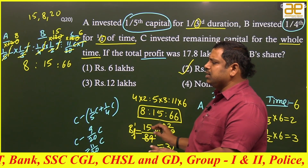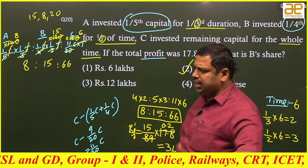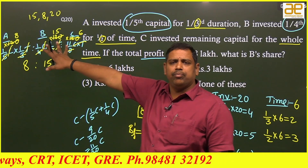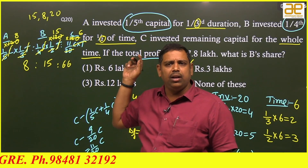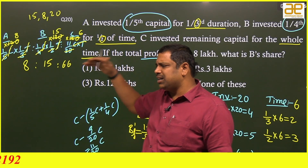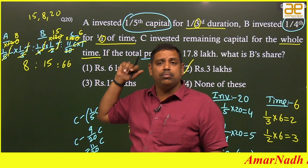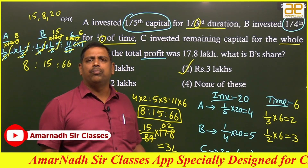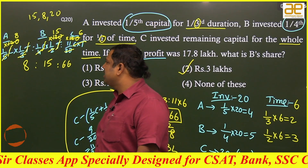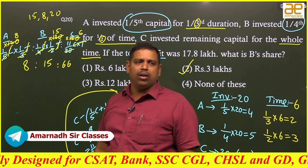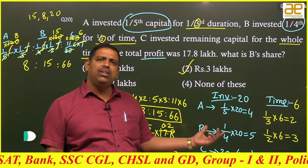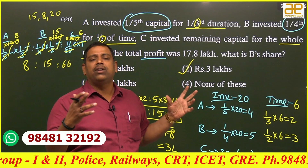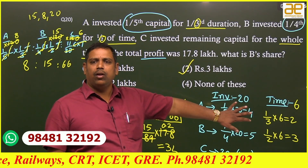Comparing the two methods, I suggest the processed method. For exams like CAT, bank, or SSC where difficult fractional calculations appear frequently, it's hard to use the raw method every time — go with the processed method. For exams like Group 1, Group 2, SI, constable, VRO, VREA, GATE, or CRT programs, the processed method is best. Choose based on which exam you are targeting.